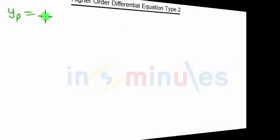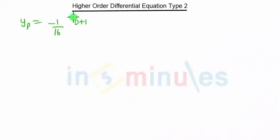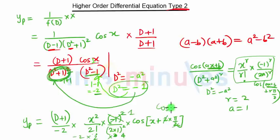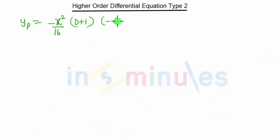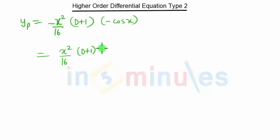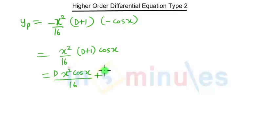(-1)² is 1, so we get minus 1 upon 16 into (d + 1), times x², times cos(x + π). Now cos(x + π) equals minus cos x, so we write minus cos x. The minus and minus in the numerator become plus, giving x² upon 16 times (d + 1) times cos x. Taking x² cos x inside the bracket gives x² cos x · d/16 plus x² cos x / 16.